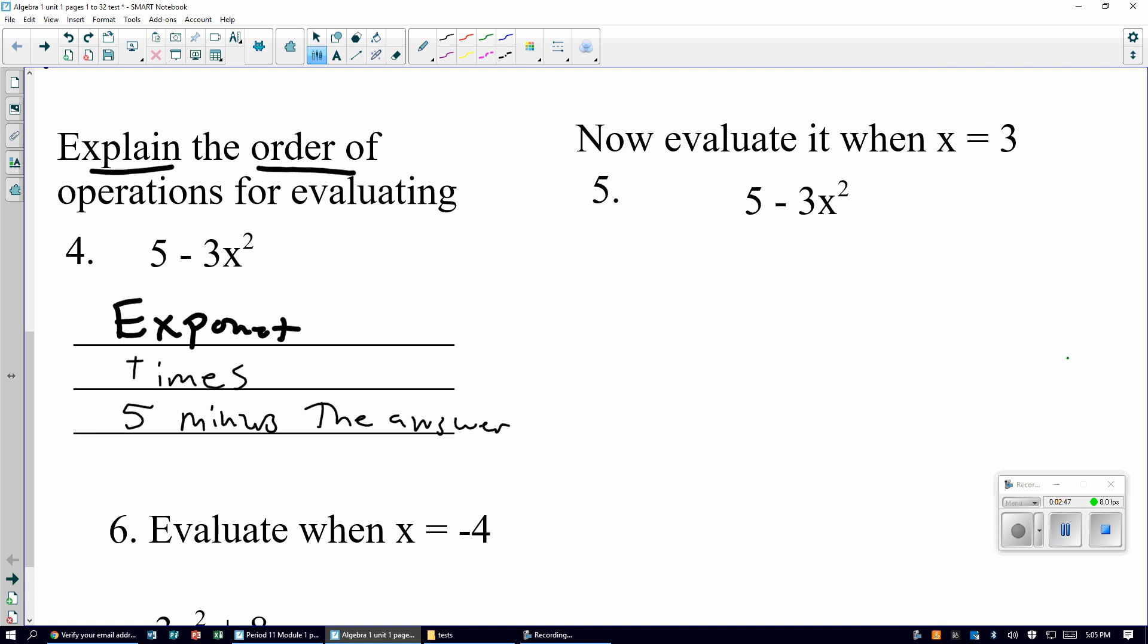So in other words, we have to do the x squared, the exponent, then you do 3 times whatever that was, and then you do 5 minus whatever that was. Okay? Now evaluate it when x equals 3.